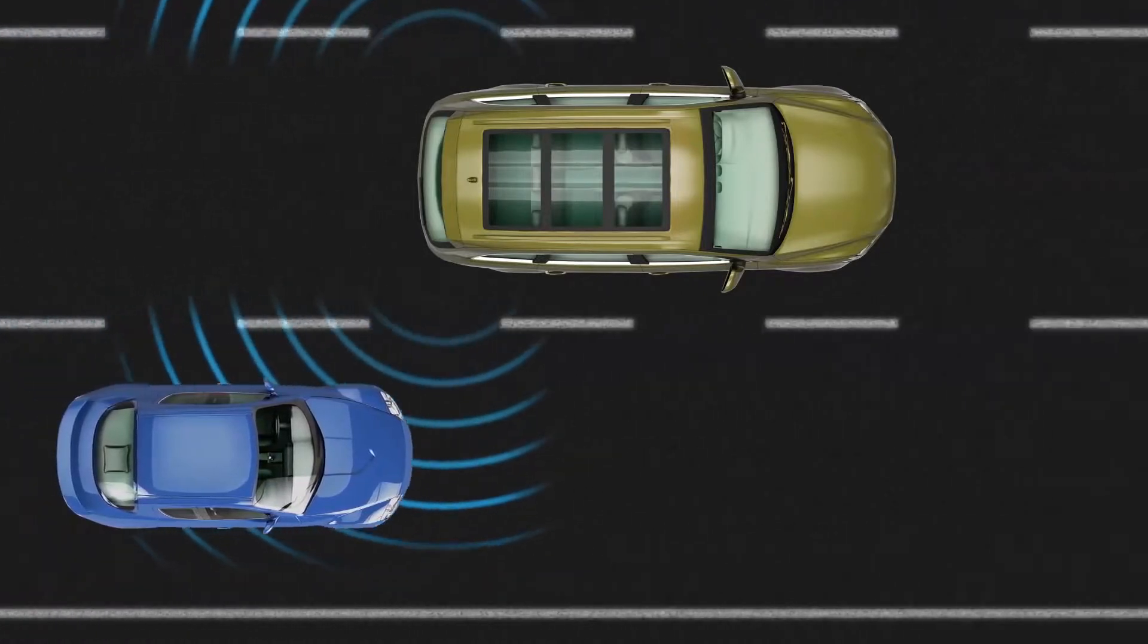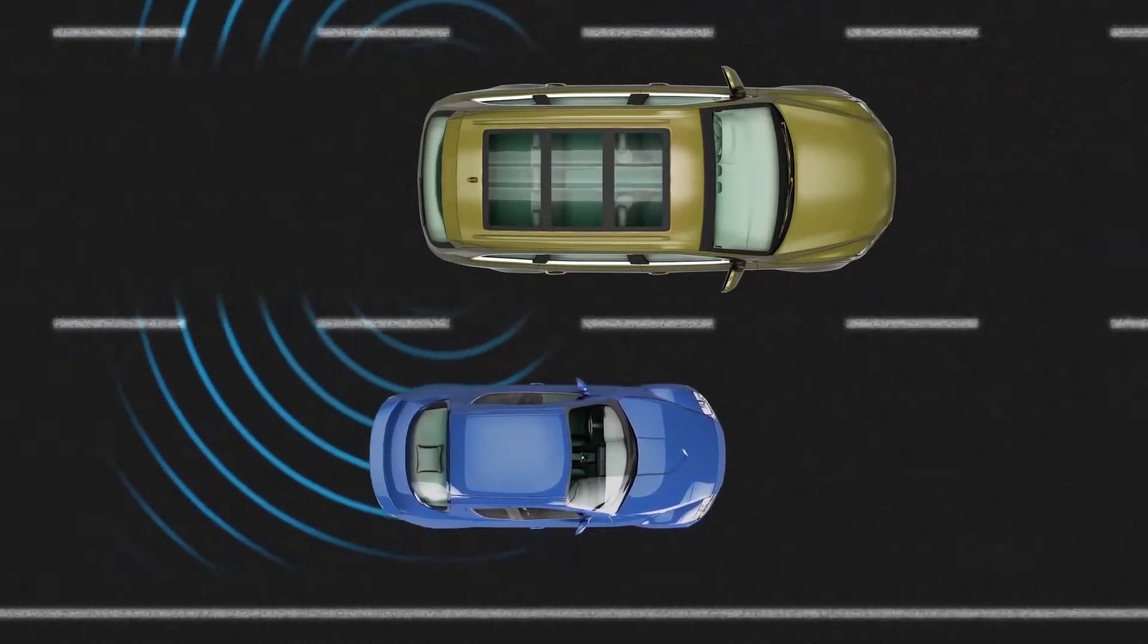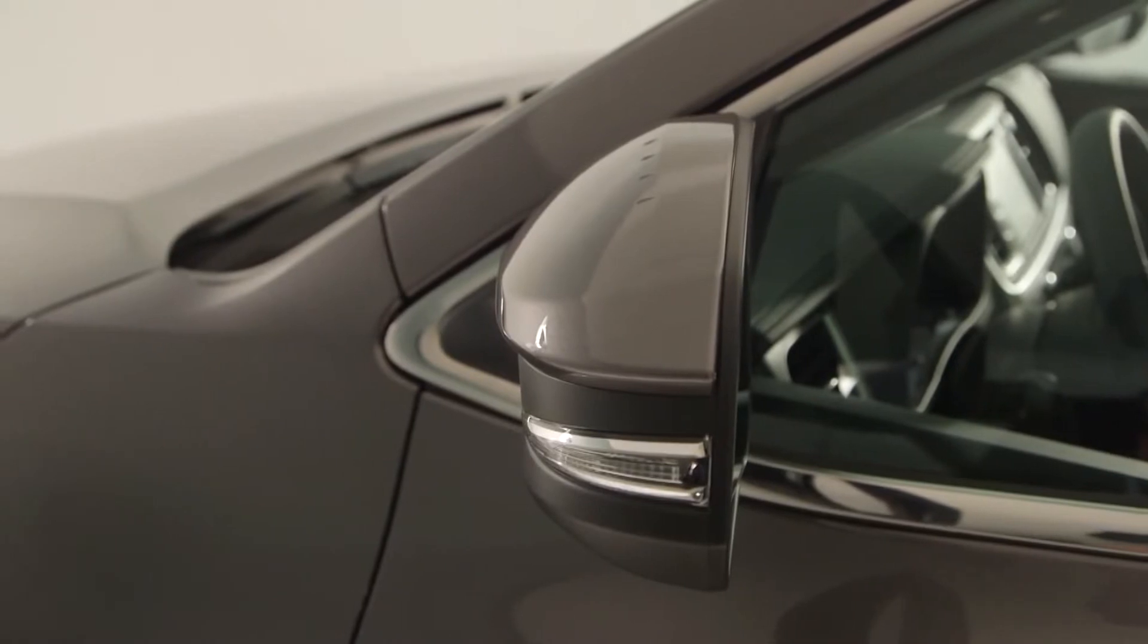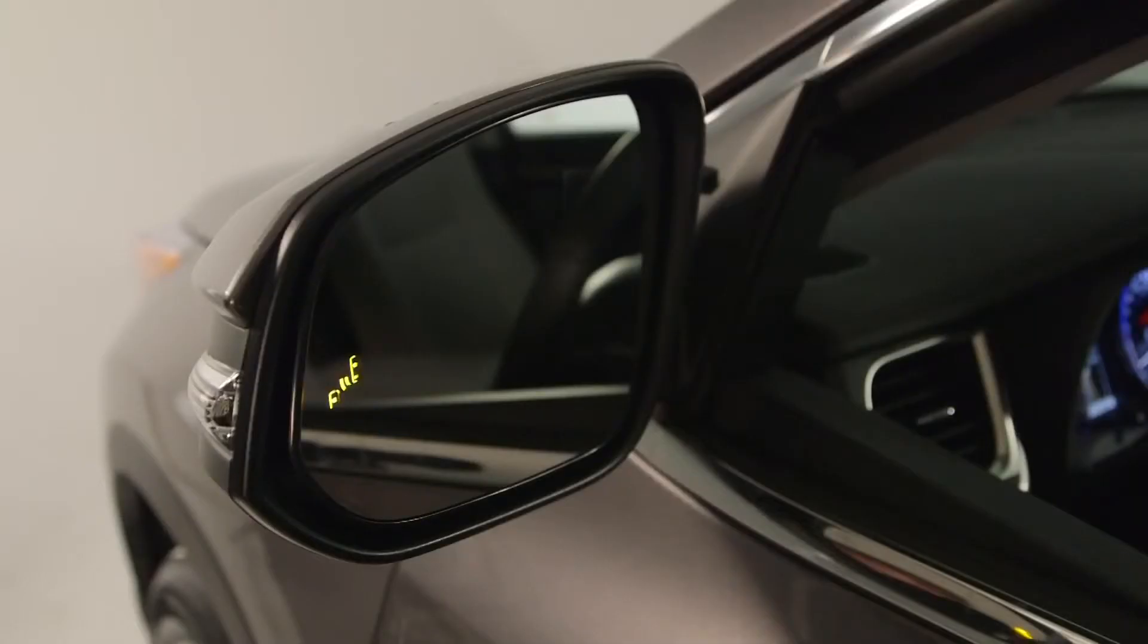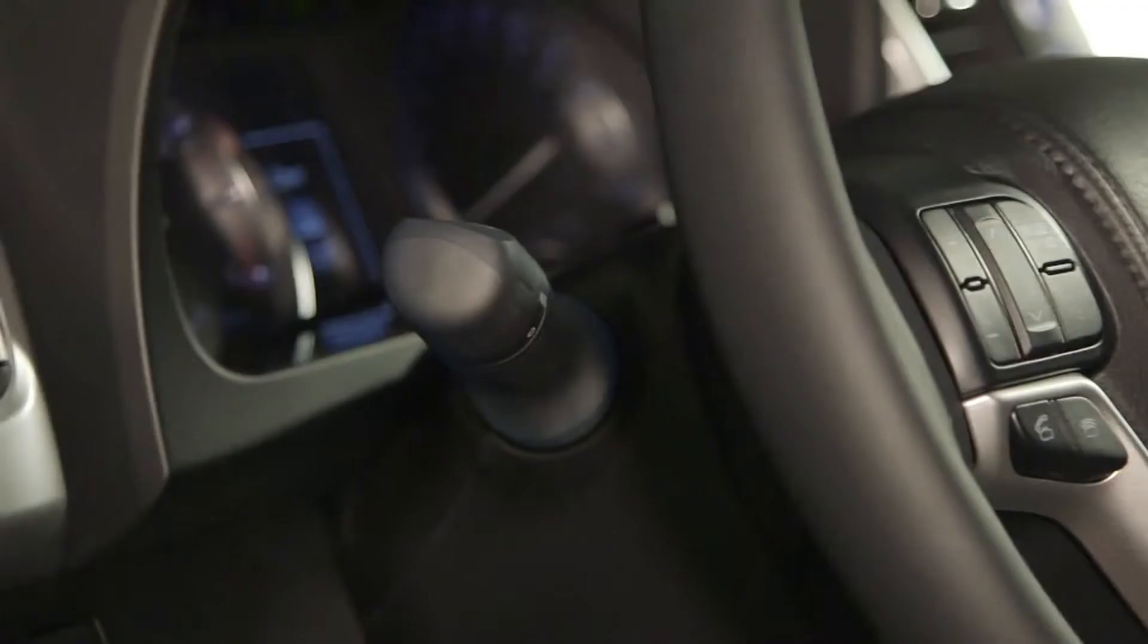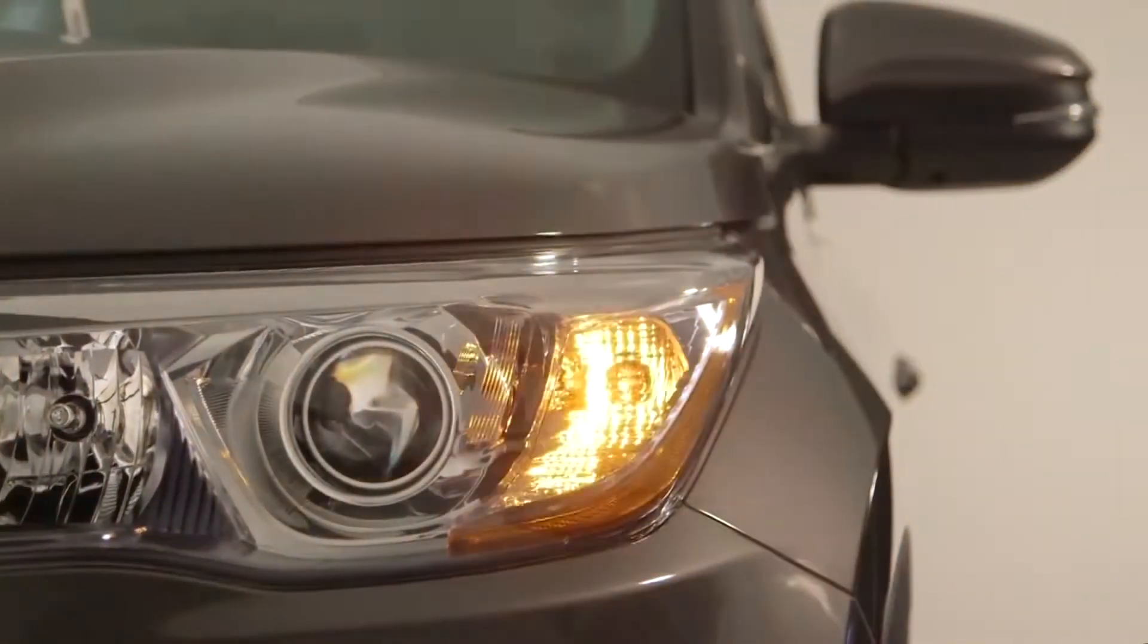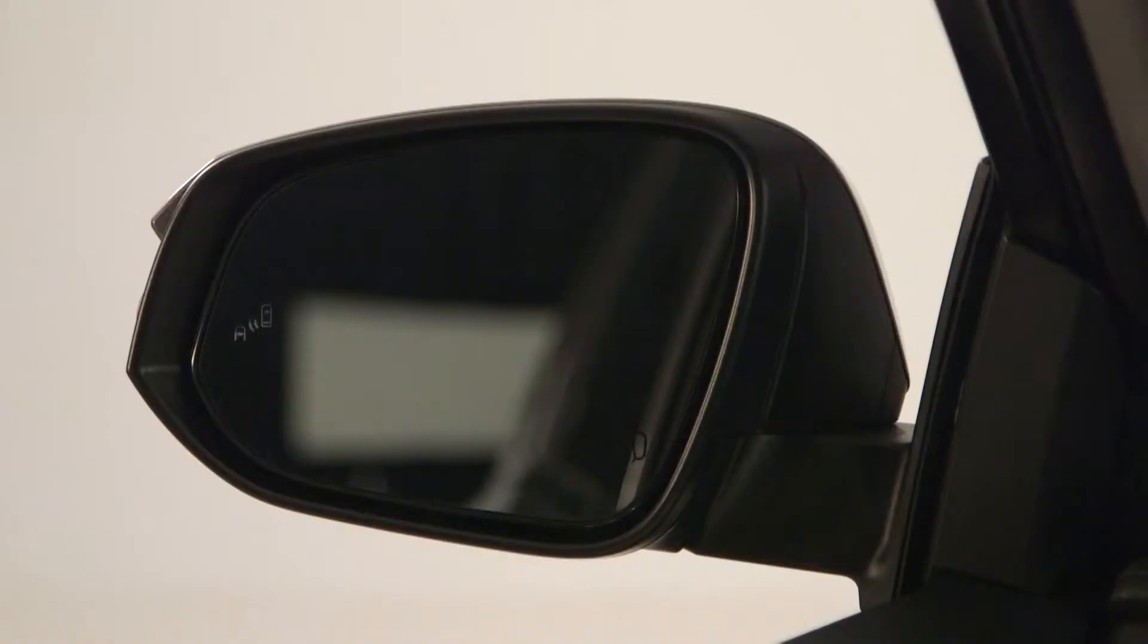When a vehicle is detected in the blind spot area on either side of the vehicle, if the turn signal is not activated, an indicator light comes on in the outside mirror on that side. If the turn signal lever is activated to signal a turn in that direction, the indicator light flashes at a fixed rate.